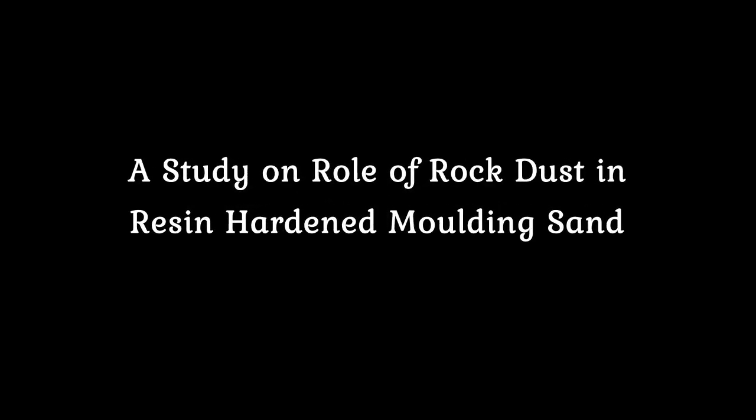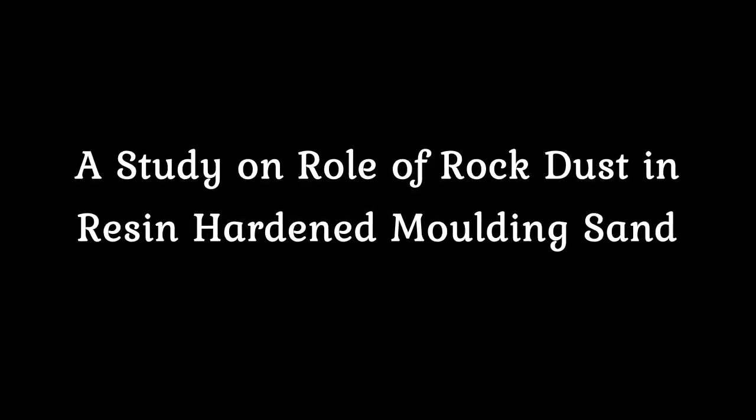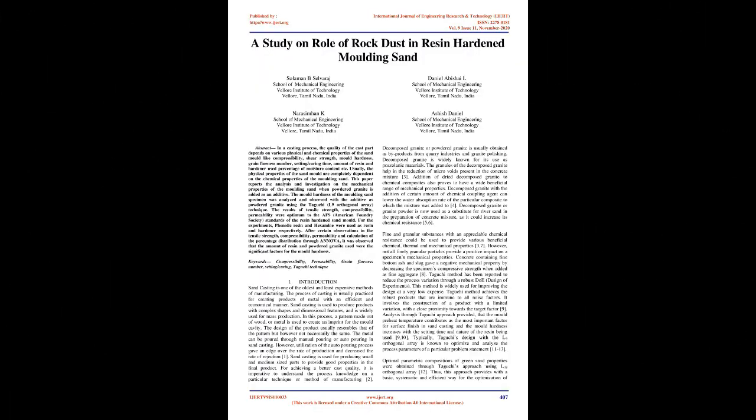A Study on the Role of Rock Dust in Resin Hardened Molding Sand. Abstract: In a casting process, the quality of the cast part depends on various physical and chemical properties of the sand mold like compressibility, shear strength, mold hardness, grain fineness number, setting/curing time, amount of resin and hardener used, and percentage of moisture content.